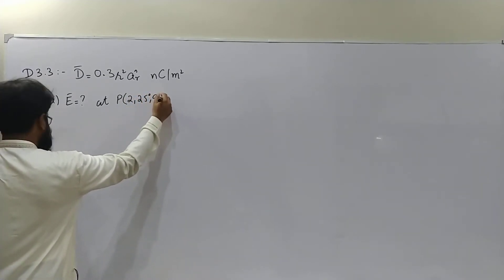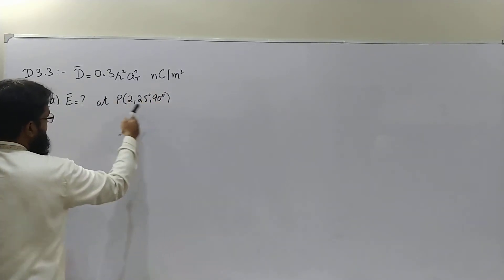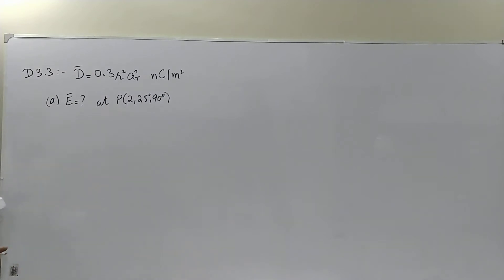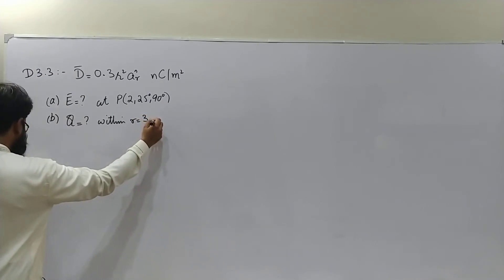In part A it asks us to find electric field intensity at point P(2, 25 degrees, 90 degrees). Since the coordinates include degrees, it is implicit that this point P is given in spherical coordinate system. In part B we are asked to find the total charge within the sphere r equals 3, and in part C for r equals 4 sphere.